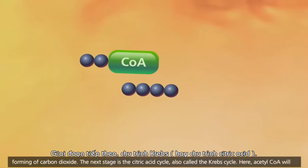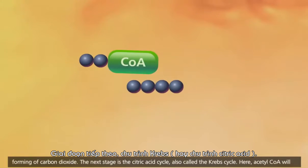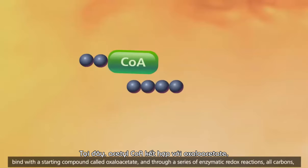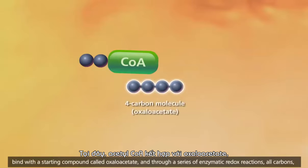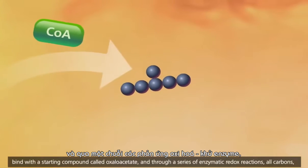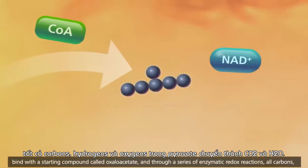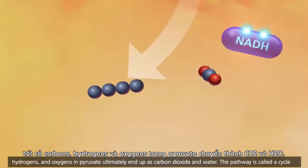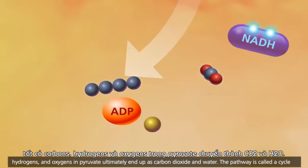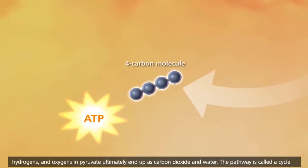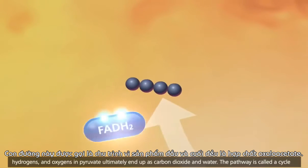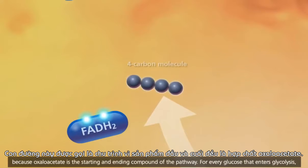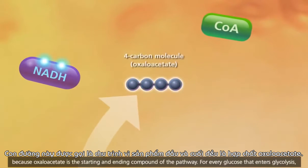The next stage is the citric acid cycle, also called the Krebs cycle. Here, acetyl-CoA will bind with a starting compound called oxaloacetate, and through a series of enzymatic redox reactions, all carbons, hydrogens, and oxygens in pyruvate ultimately end up as carbon dioxide and water. The pathway is called a cycle because oxaloacetate is the starting and ending compound of the pathway.